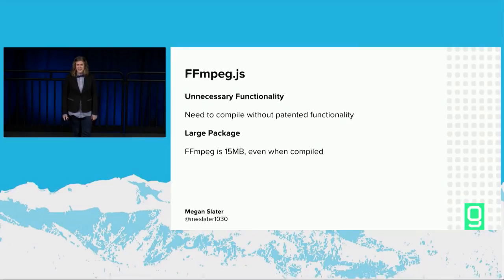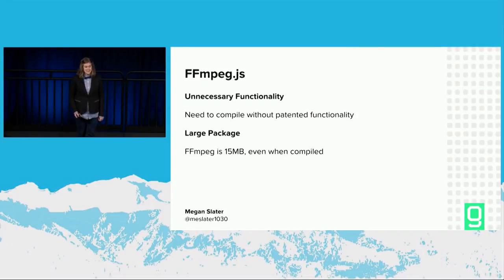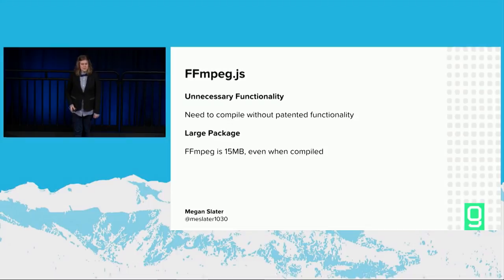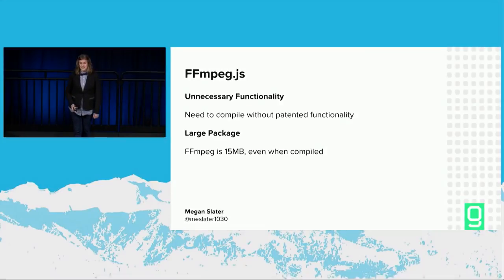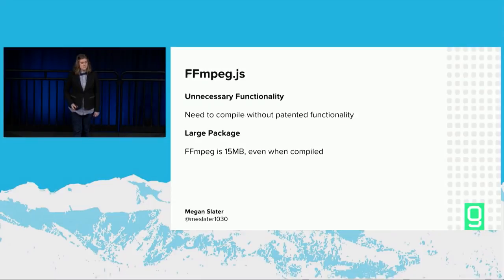But getting back to the NPM install, I saw a couple of concerning things right off the bat. First is the size — the entirety of FFmpeg, even when compiled, is about 15 megabytes, which is way too much to load when we're loading the app. The default build also includes tons of functionality we didn't plan on using, including the H.264 codec, which as of last year was still patented — we needed a binary compiled without it. Second, the version of FFmpeg that this library is based on is a couple of years old. So we came to the conclusion that even though there is an existing NPM package, we still needed to compile our own WASM file.